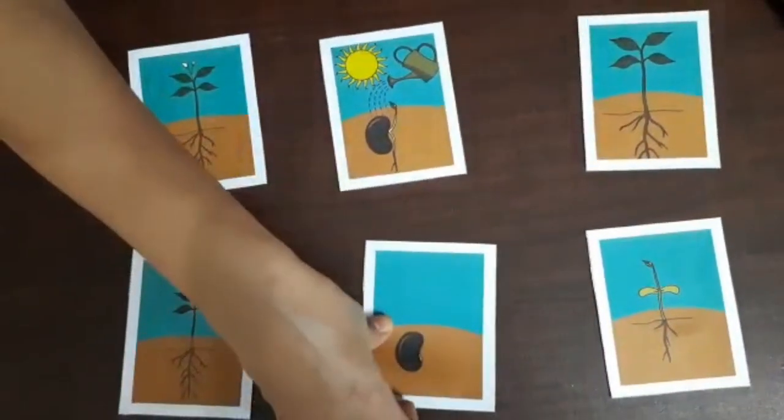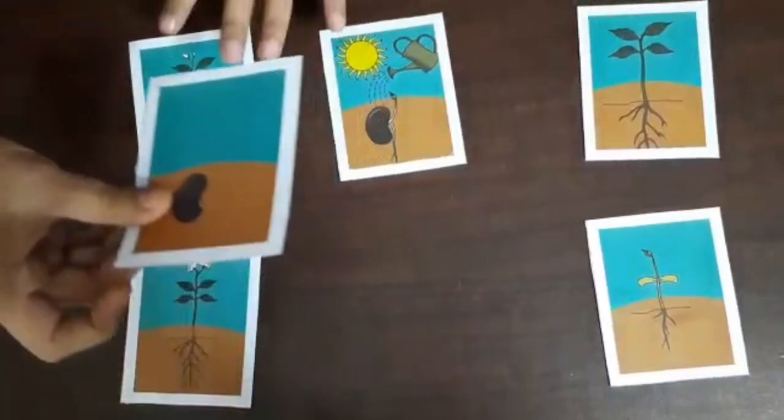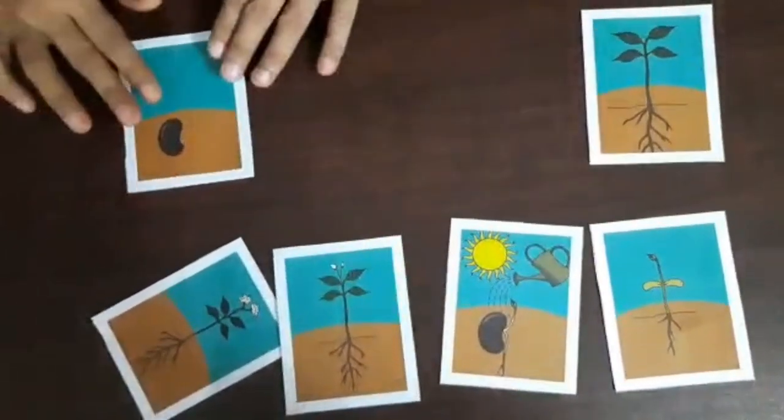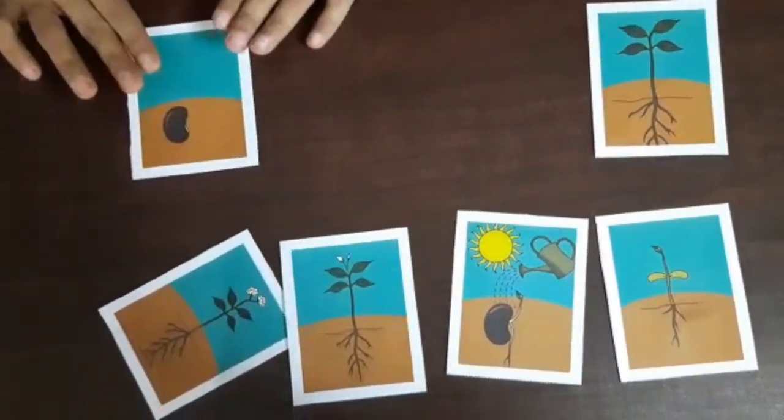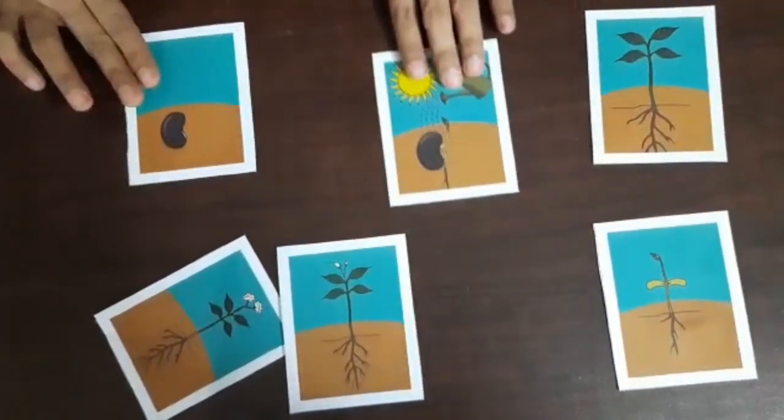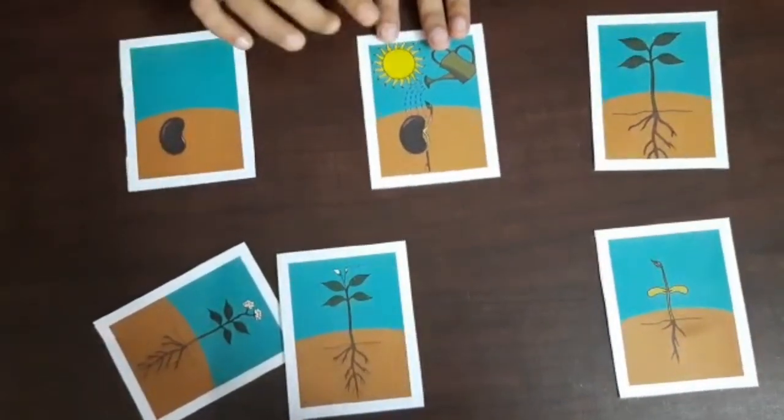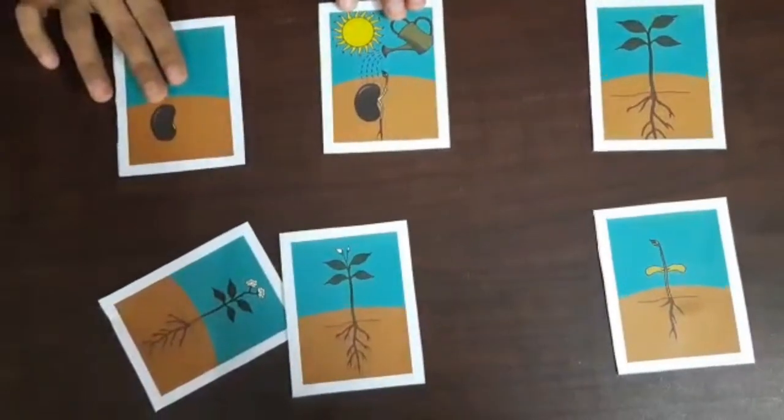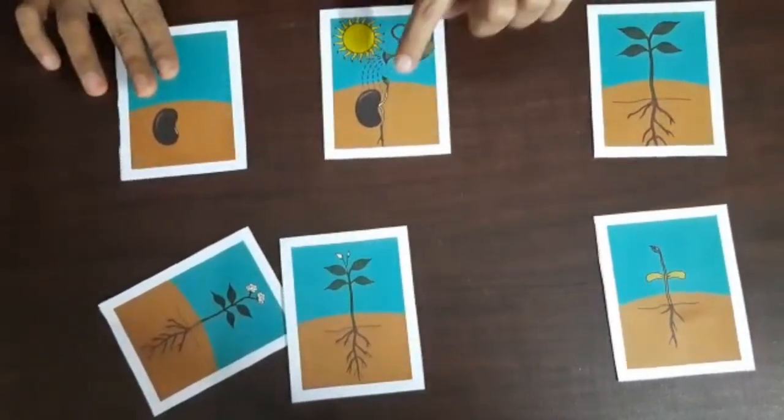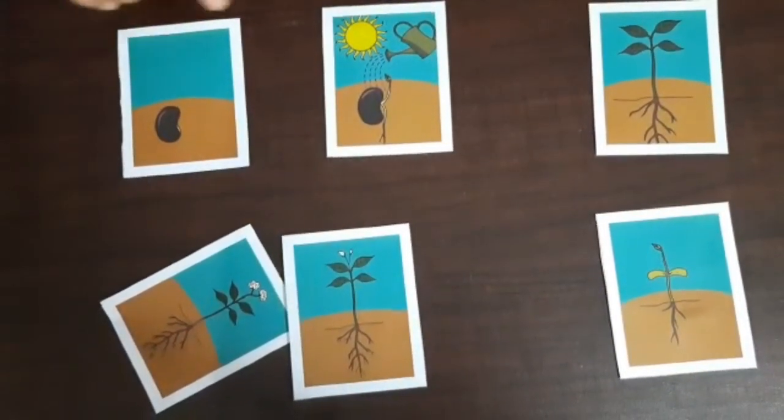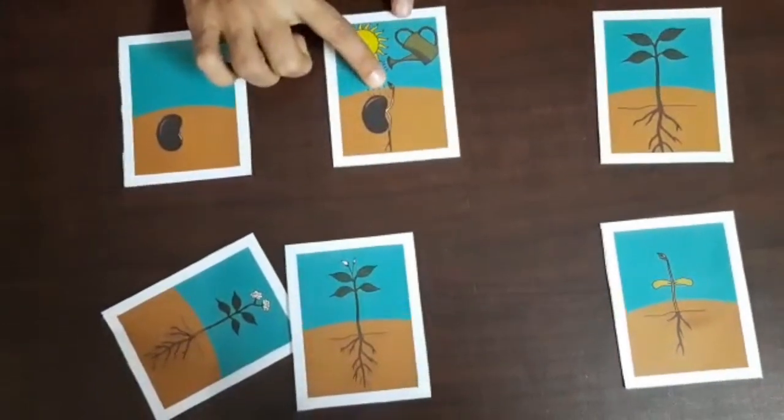Yes. The first step is we have to sow a seed. Right? Now when we water the seed and when appropriate sunlight comes, then what happens? A tiny shoot comes out of the seed. You can see over here.